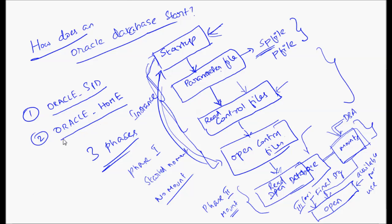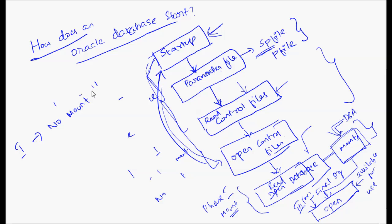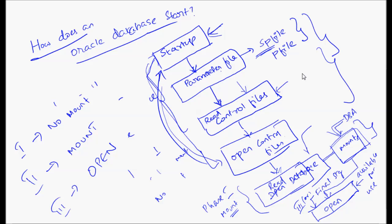So three phases. Phase one is no mount mode, phase two is mount mode, phase three is open. This sequence you need to understand. I'm going to show examples of how this sequence works. But this is the fundamental of the Oracle startup process. Thank you for watching.